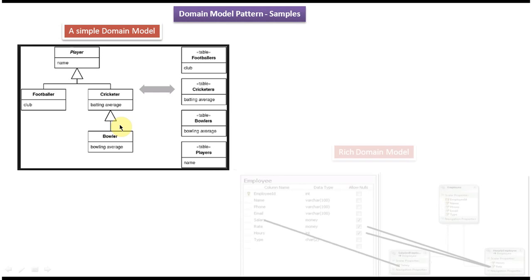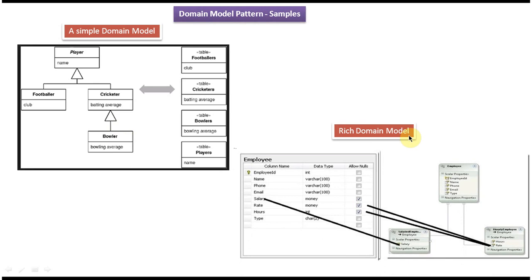Now I will give one example of rich domain model. We have only one table — the Employee table — with fields: Employee ID, name, phone, email, salary, rate, hours, and type. But if you see this, we have three classes. Employee is a superclass, Salary Employee is a subclass of Employee, and Hourly Employee is also a subclass of Employee. So one table, but we have three classes.